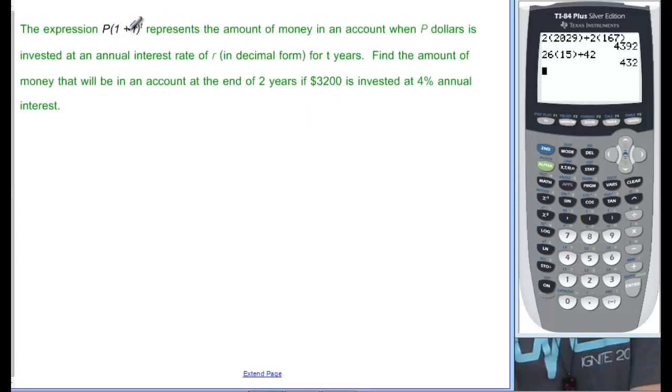Now we've got an interesting looking thing. The expression P times the quantity 1 plus R to the T represents the amount of money in an account when P dollars is invested at an annual interest rate of R, and notice that it says in decimal form, for T years. So we've got a P in our equation, and we've got an R in our equation, our expression, and we've got a T.